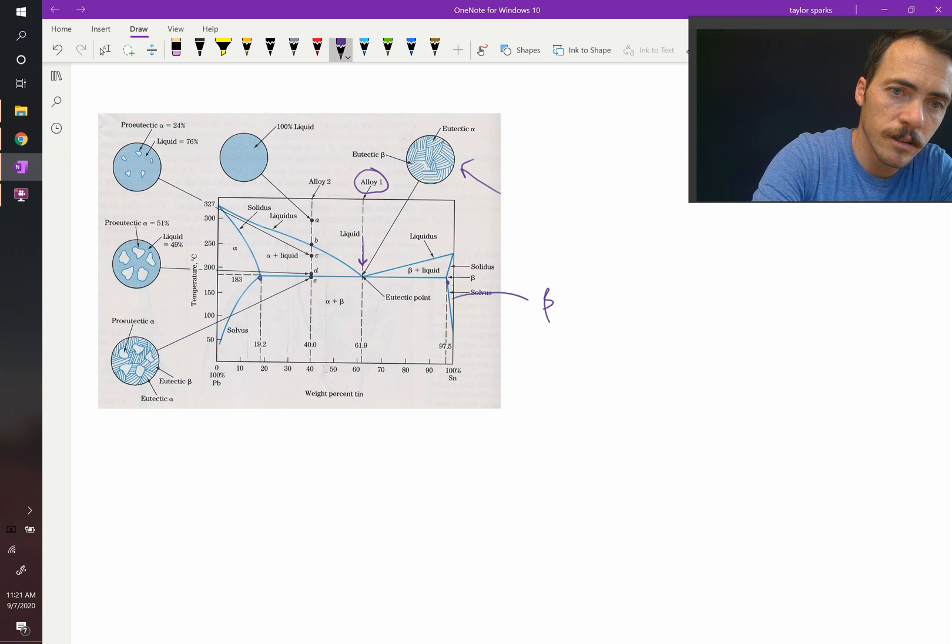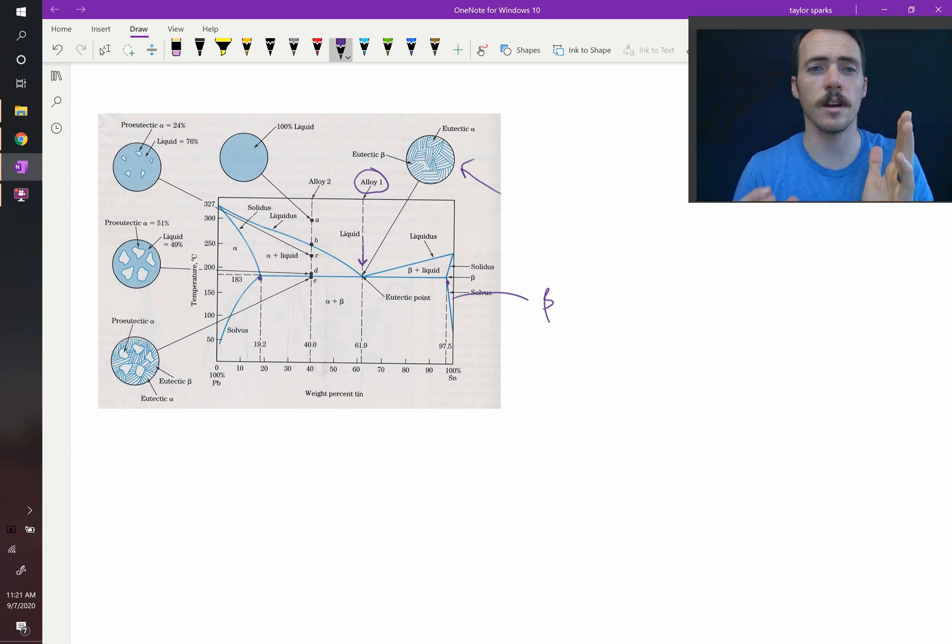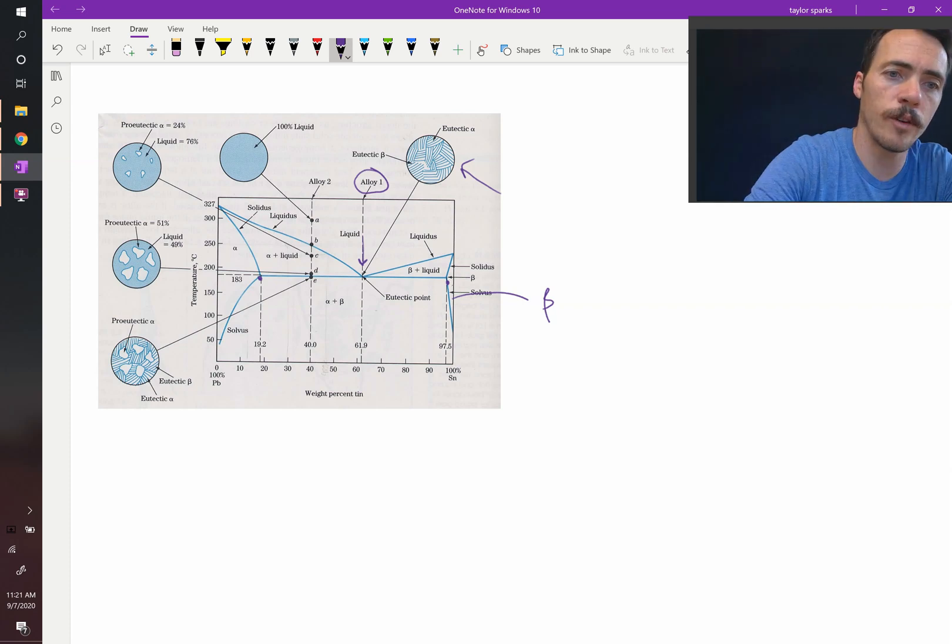And then over here you've got, not pure tin, you've got lead with almost 20% of the atoms are tin. So there's different solubility limits on both sides of this phase diagram. So that's alpha and beta. What if you cool it down in this region over here, alloy two though? Alloy two.